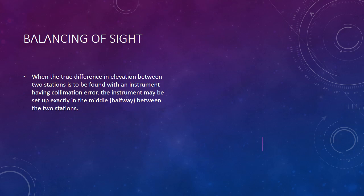When measuring the elevation difference between two stations where there is a collimation error, if we measure without the collimation error the difference should come out to be exactly true. However, if there is a collimation error, the difference will not be correct. So by placing the instrument in between the two stations — exactly at the midpoint or halfway — we can balance the error, eliminate it, or make both errors equal.